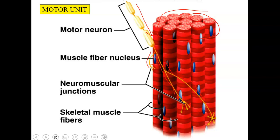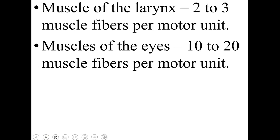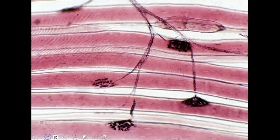As the body starts to decompose, those muscle fibers and neuromuscular junctions break down and the muscle decomposes. Muscles of the larynx have two to three muscle fibers per motor unit. Muscles of the eyes have 10 to 20 fibers per motor unit. Muscles of the biceps brachii and gastrocnemius have anywhere from 2,000 to 3,000 muscle fibers per motor unit. Once one motor unit signals contraction, all those fibers receive the same signal at the same time. Under a microscope, this is what a neuromuscular junction or motor unit looks like, attaching to the sarcolemma.